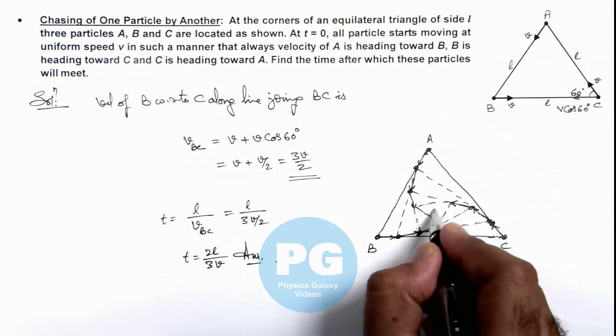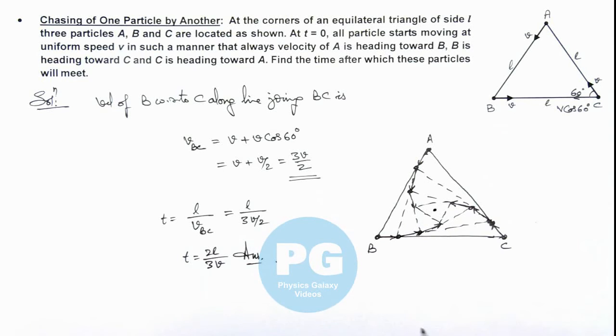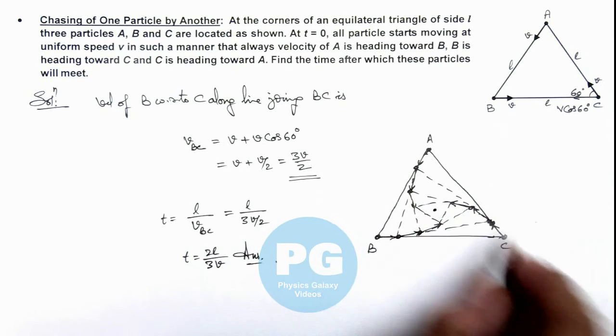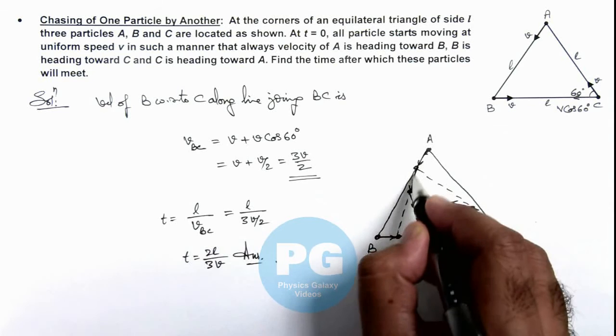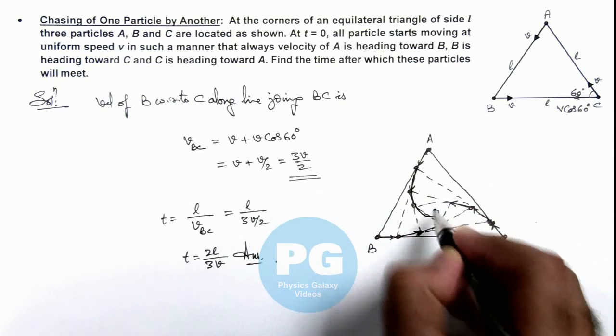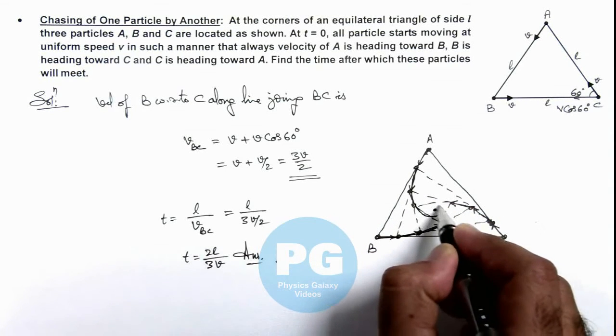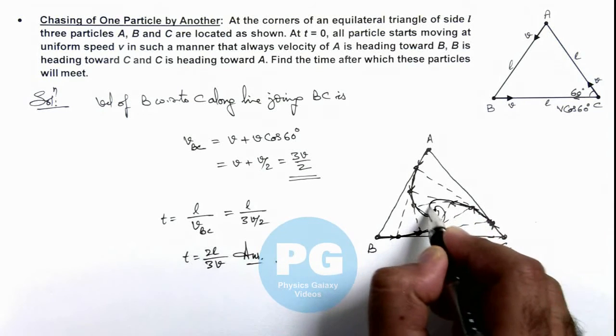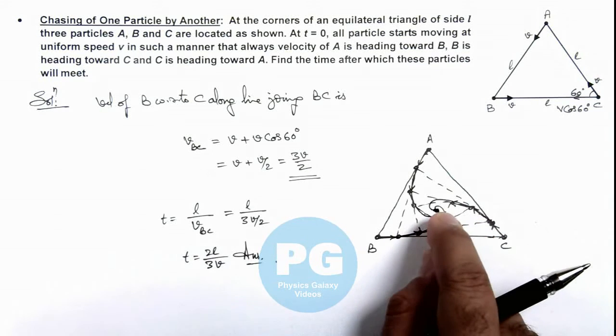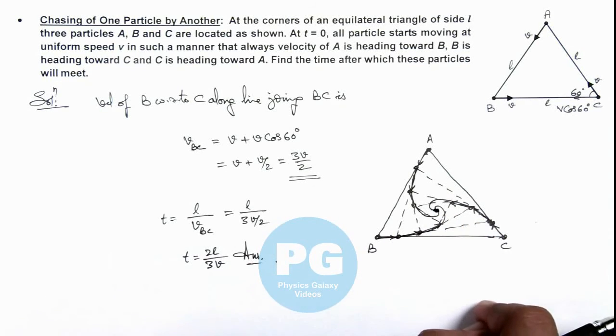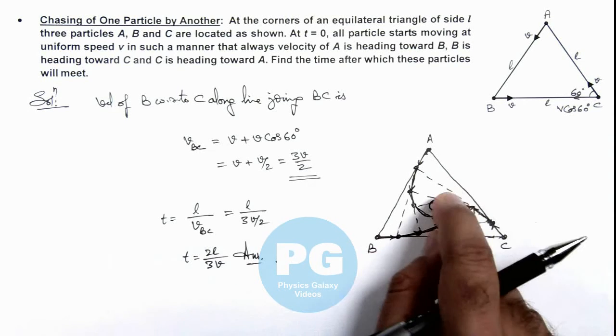So finally, this triangle will converge to the centroid of this bigger triangle. And we can see this would be the path which each particle is going to follow, a kind of spiral shaped path. Then finally, all these particles are going to meet at the centroid of this triangle. So this is the actual motion of triangle.